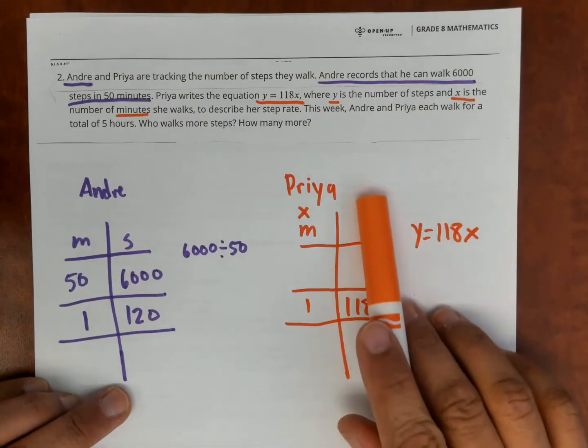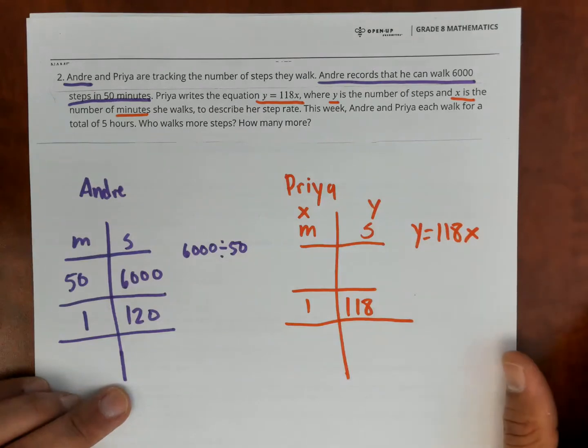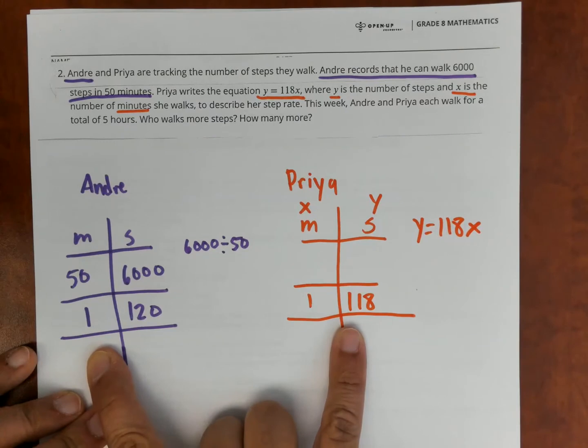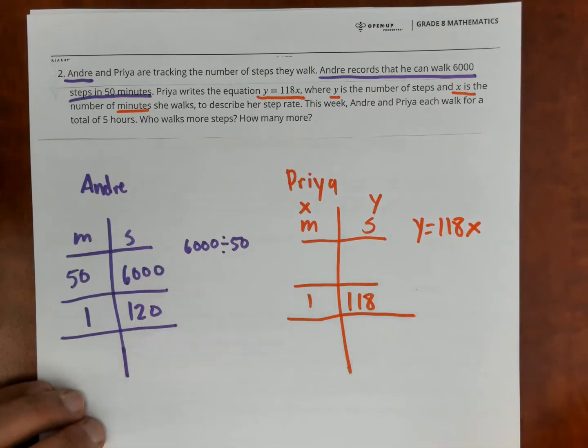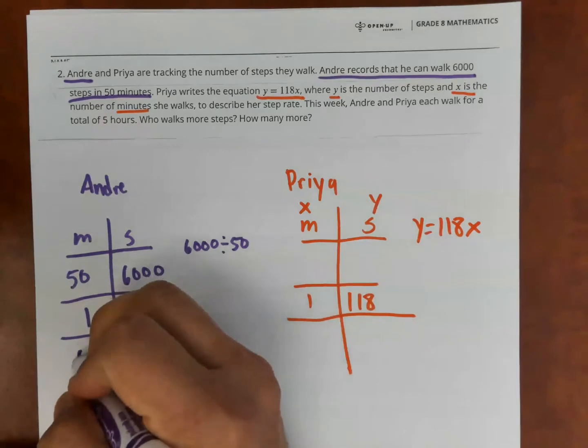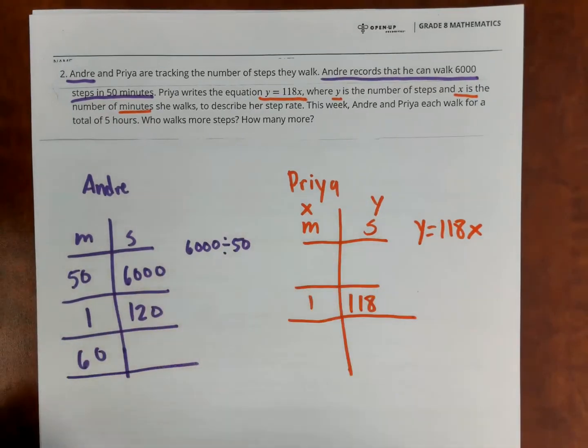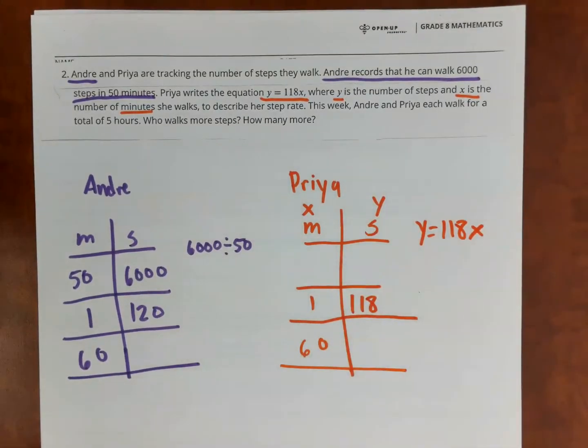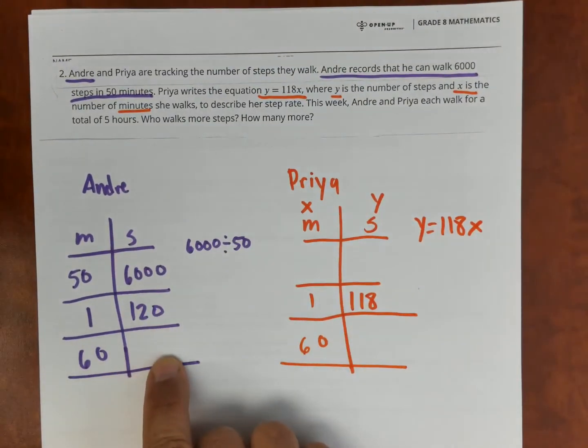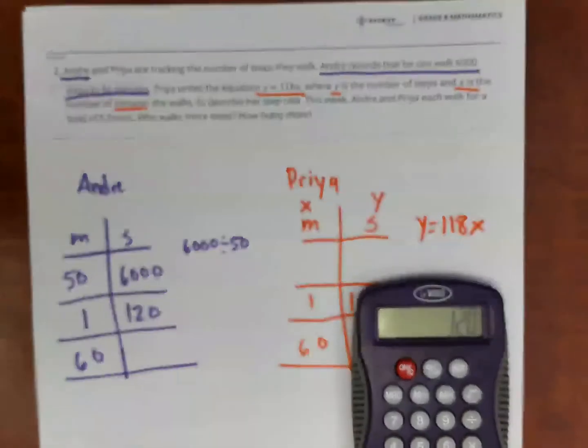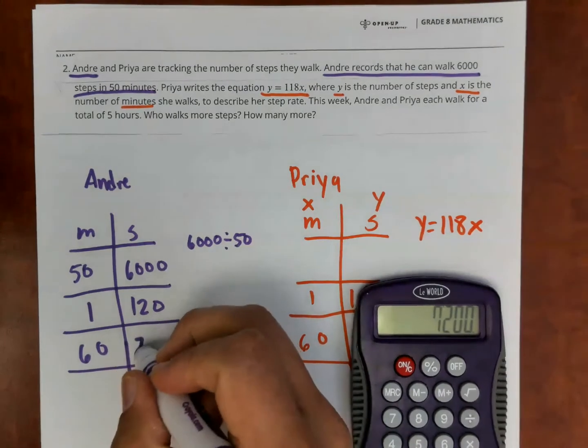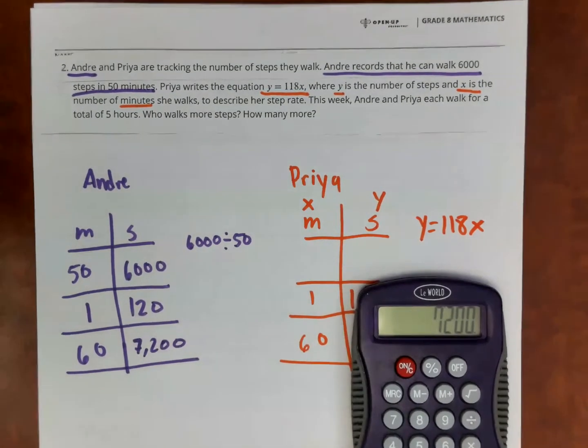Now what I can do is now to answer the specific question that it's asking me for, is a total of five hours. So now that I know what each person does in one minute, what can I do to find one hour is I can just, there's 60 minutes in one hour. So I'm going to find that row for each one. So I'm just going to take their unit rate times 60. So for Andre, I do 60 times 120 and I get 7,200 steps.